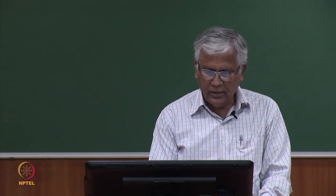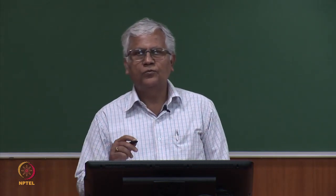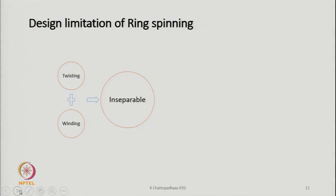So that is the issue — we cannot go for very high traveler speed because of these reasons. This is a desired limitation of ring spinning. In ring spinning, the twisting and winding operations are inseparable — you cannot separate them out. The spindle is the prime mover; it rotates and transmits rotation to the traveler, and the traveler as a result runs on the ring.